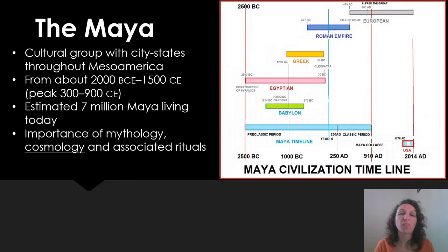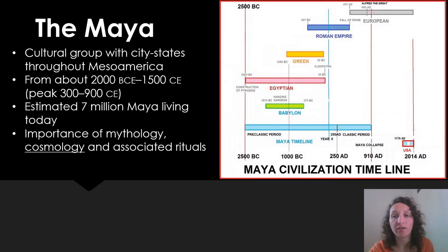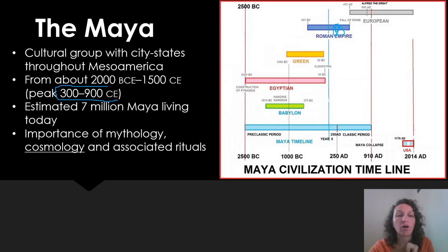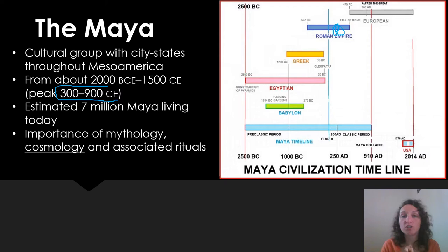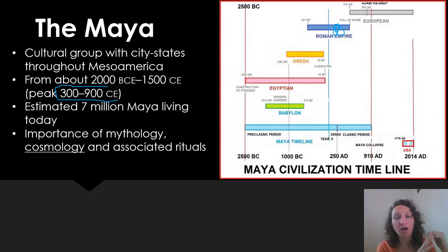Next we're going to talk about the Mayan. The Maya are probably the longest-spanning culture in Mesoamerica. They had many, many city-states, and they peaked right around the time that Rome started to go into decline, around 300 CE. The Mayan religion is based on mythology, ritual, and cosmology — the idea that cosmic bodies like the sun, the moon, and the stars have a direct impact on you, your life, and your culture, and also that you have power over them.